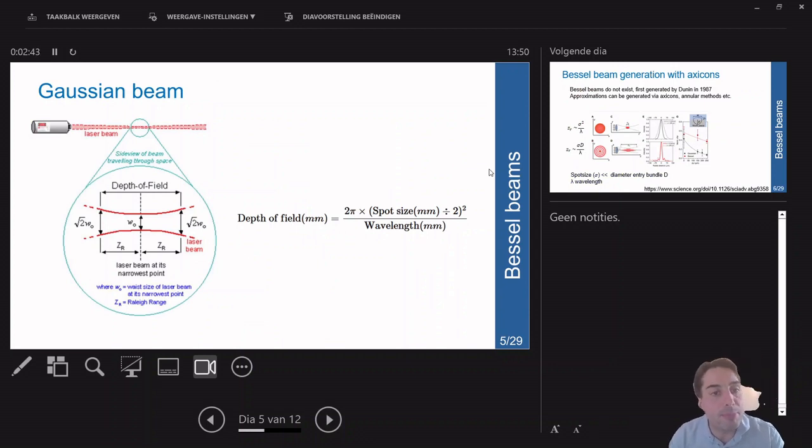When I speak about the depth of field, I mean that the size of the Gaussian bundle increases once you move away from the focal length. If you move the Rayleigh range away, your focus length increases by the square root of two.